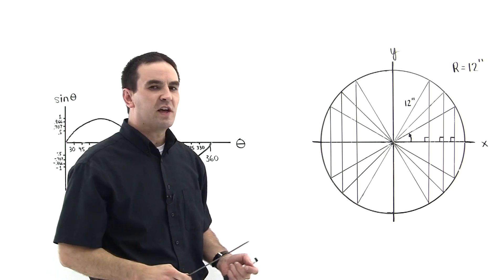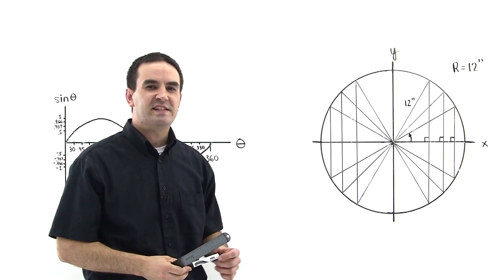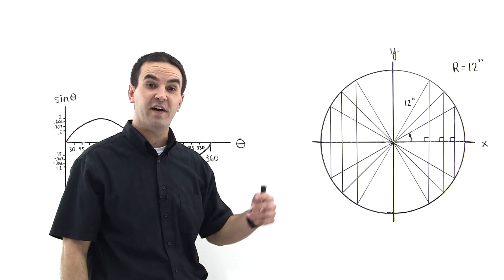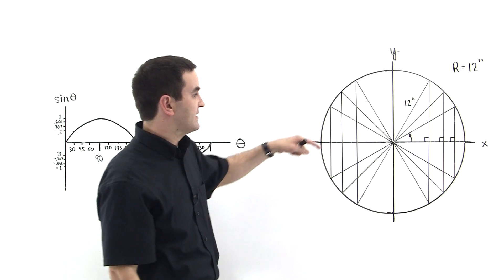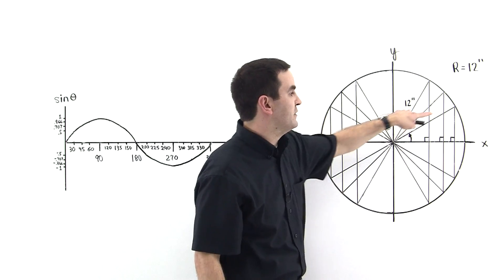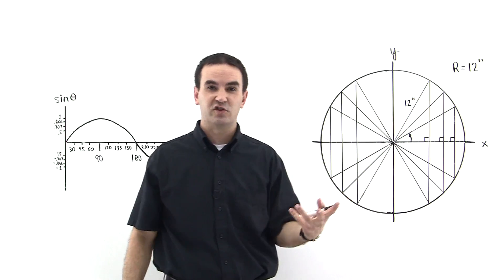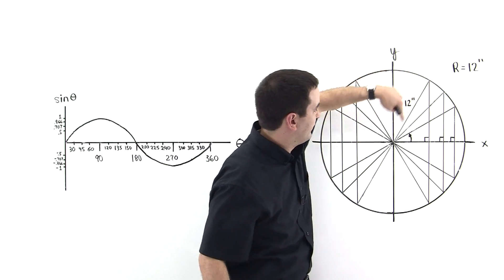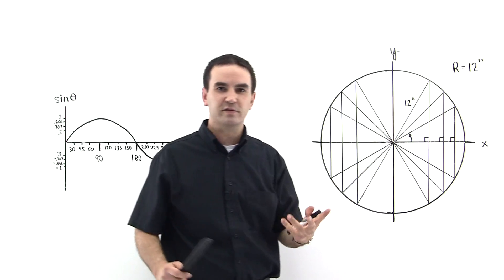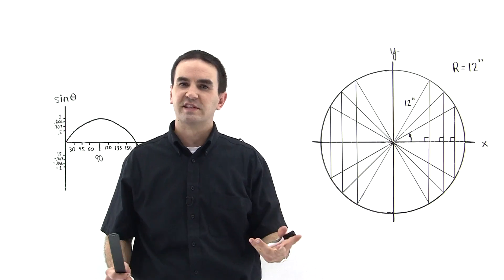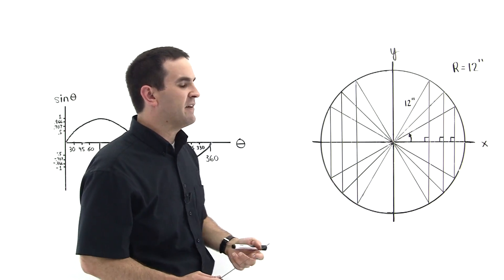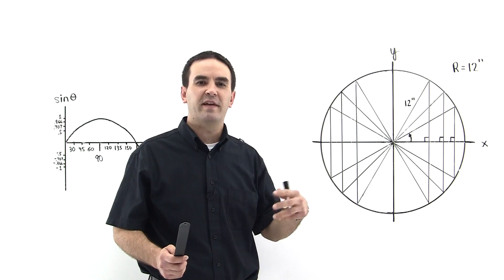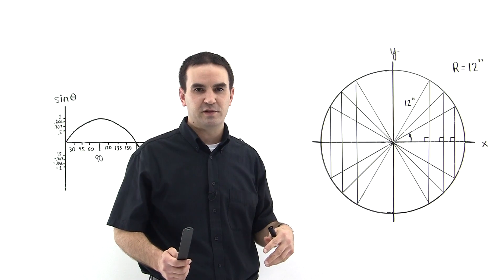The sine function comes from plotting the height of each of these triangles divided by the radius — that is, the hypotenuse of each triangle. The hypotenuse of each triangle is the radius of the circle, which is 12 in each case. So the hypotenuse is always the same, and the sine function comes from dividing the height of each triangle by that hypotenuse.